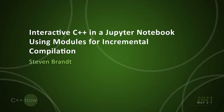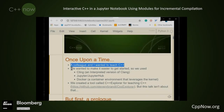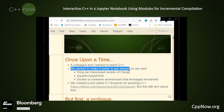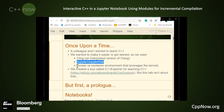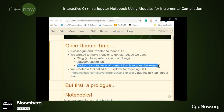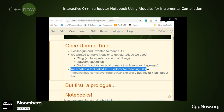Once upon a time, a colleague and I wanted to teach C++. We wanted to make it easier to get started, so we used Cling, an interpreted version of Clang, Jupyter and JupyterHub which provide interactive notebooks, and Docker, a container environment that leverages the Linux kernel to package it all up. We created a tool called the C++ Explorer, and this is the GitHub link for that product.